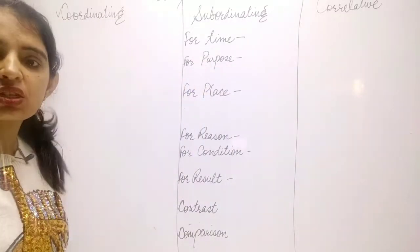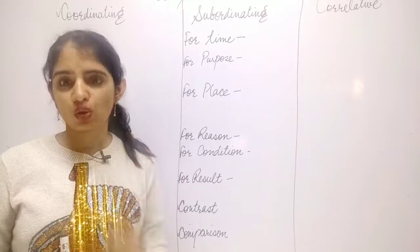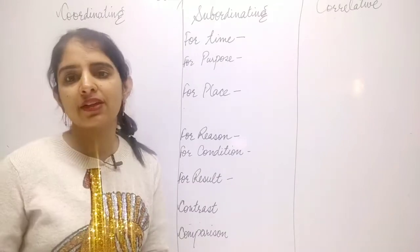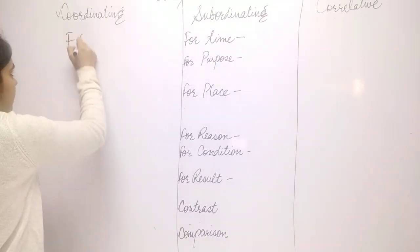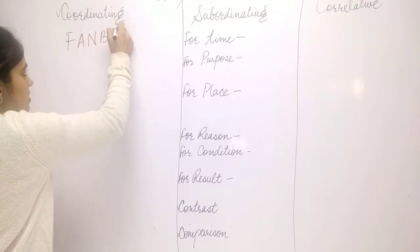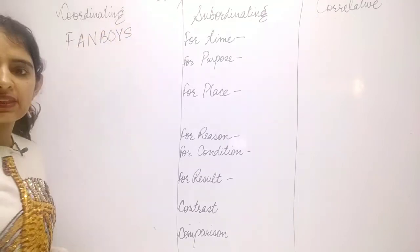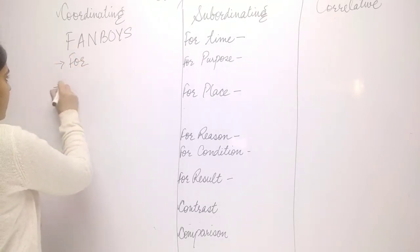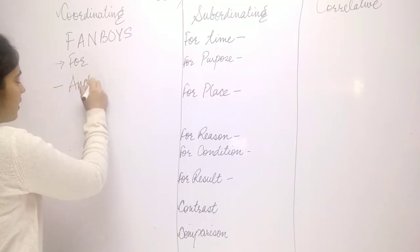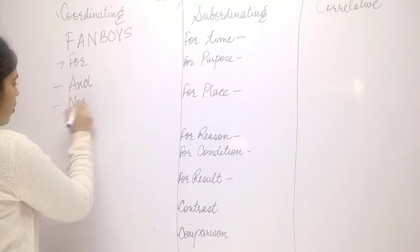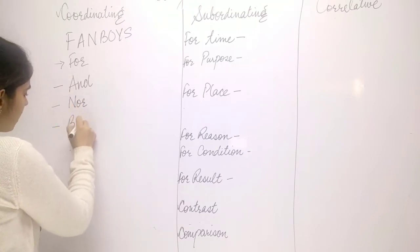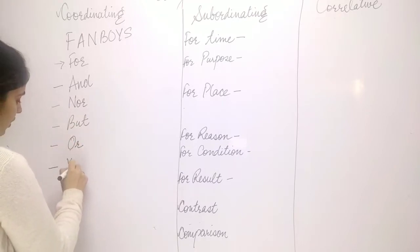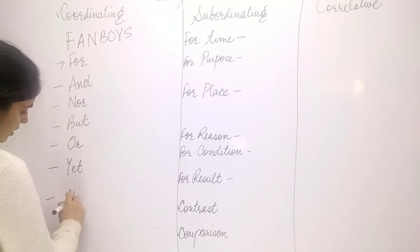For coordinating conjunctions, which are used to join independent sentences, the trick is the mnemonic FANBOYS: F stands for 'for,' A stands for 'and,' N stands for 'nor' or 'not,' B stands for 'but,' O stands for 'or,' Y stands for 'yet,' and S stands for 'still.'